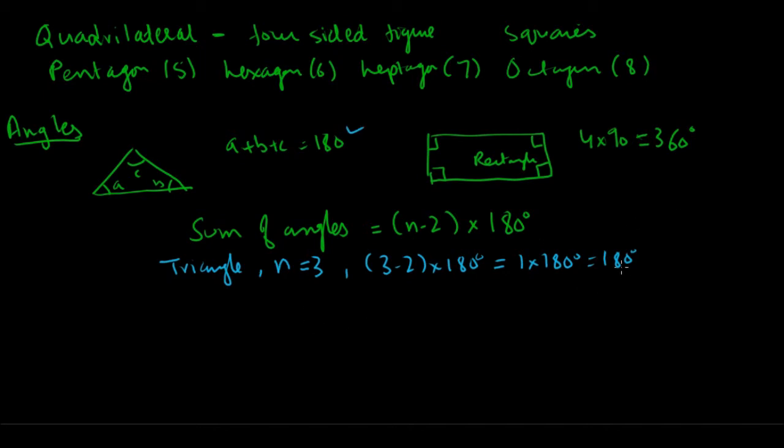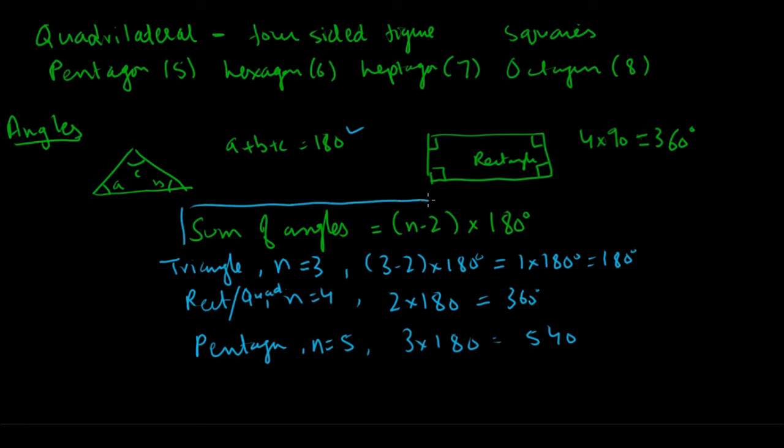For a rectangle or any quadrilateral with n = 4, you get (4 - 2) × 180 = 2 × 180 = 360°. For a pentagon with n = 5, you get 3 × 180 = 540°. This is a handy formula. Memorize it: sum of angles in a polygon = (n - 2) × 180°.